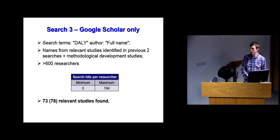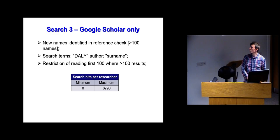I reviewed the ones I'd found and got even more researchers that were involved. I did the same thing again, but this time I just used their surname because using their first name and middle name and surname was very specific. Sometimes where just one initial was used, it didn't come up. So this kept it more general but also widened the number of studies I found, up to nearly 7,000 in one case. So I just looked at the first 100 in each case. I found five more here, which made a total of 78 in this third search.